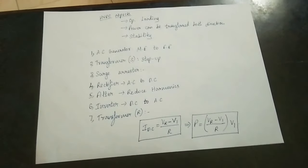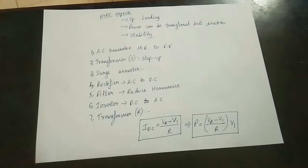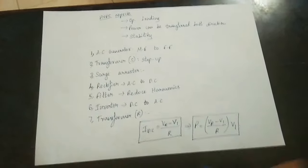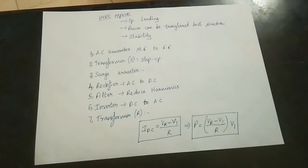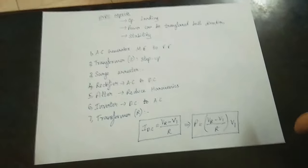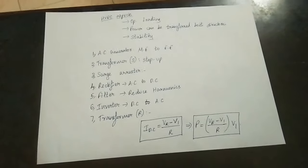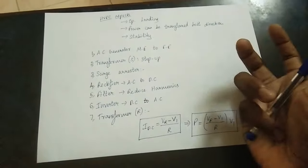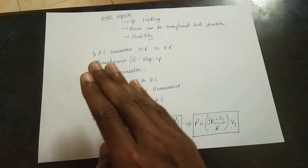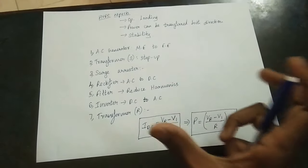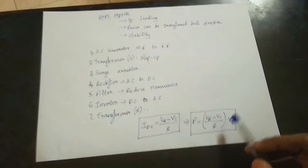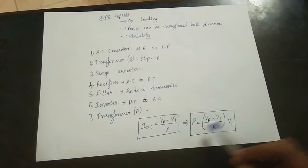On the receiving side, the output is obtained. The transfer value is the direct current. Vr is the receiving end voltage. The current is given by (V1 minus Vr) divided by R, where V1 is the sending end voltage. The power is the input voltage multiplied by the current.